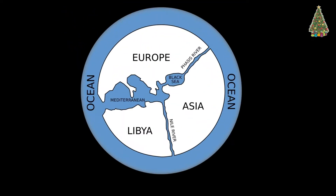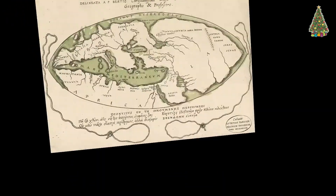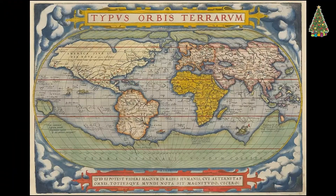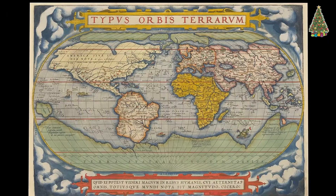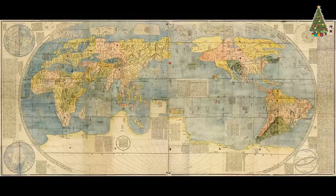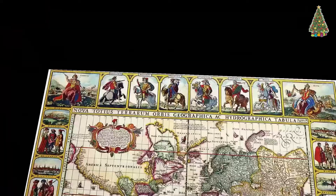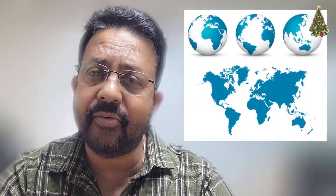Since ancient times we have tried to capture and recreate the world around us. With progressing technology, our map-making has significantly improved from ancient times. Today I am going to show you some of the techniques that we use to create a 2D map and what are the main problems that we have to accept and live with.